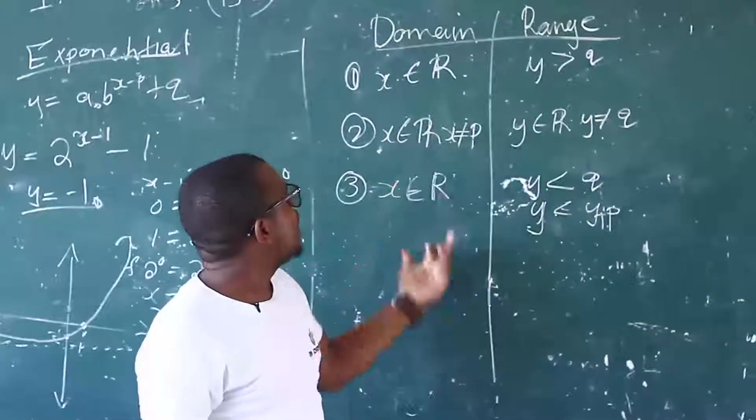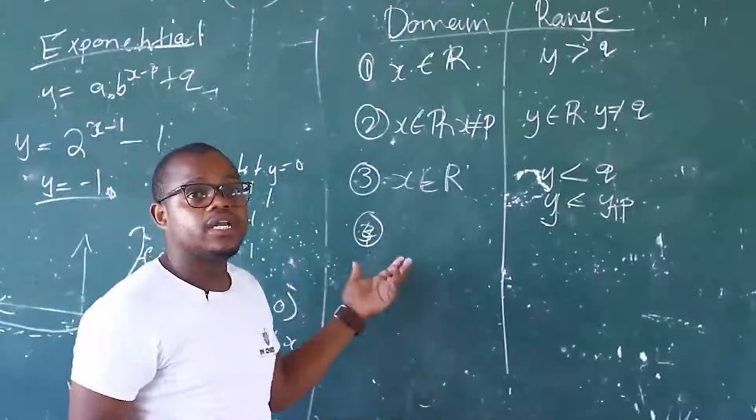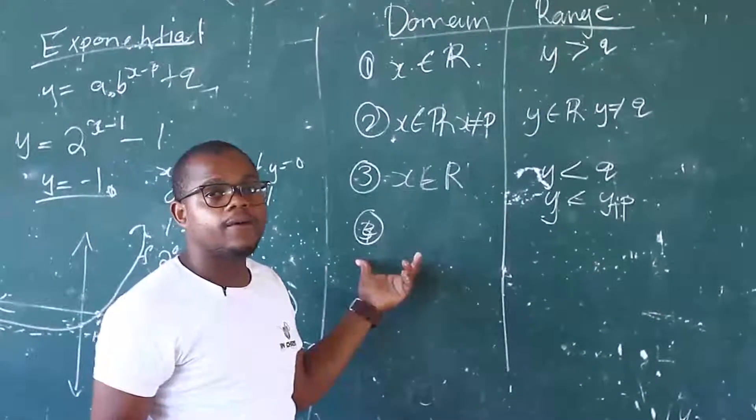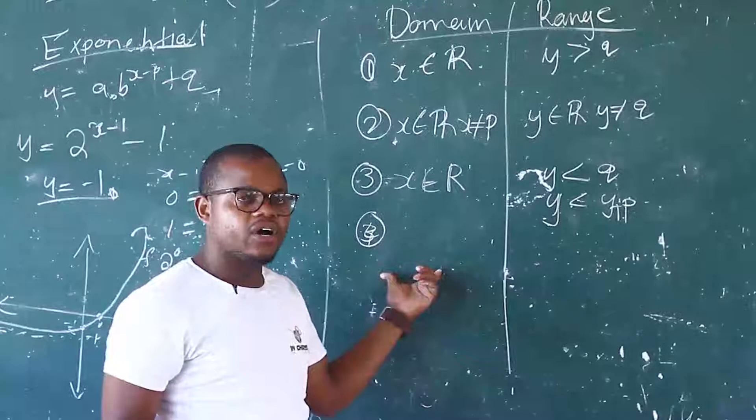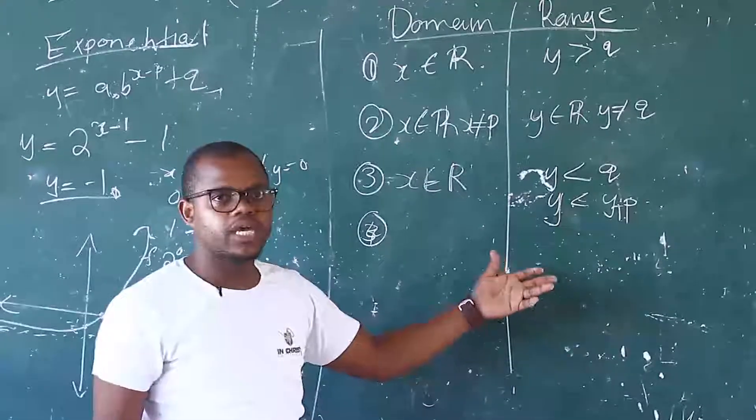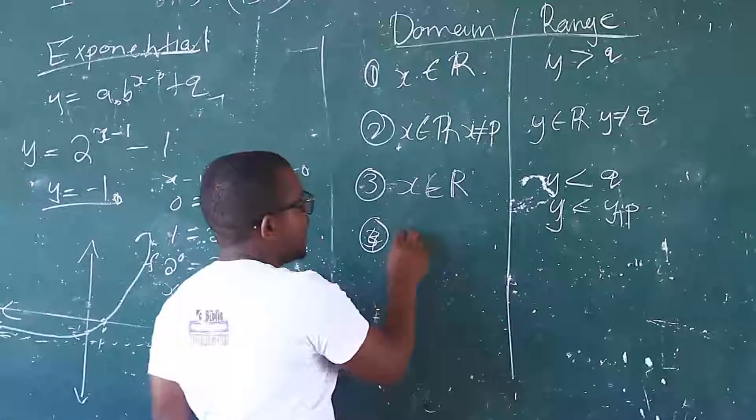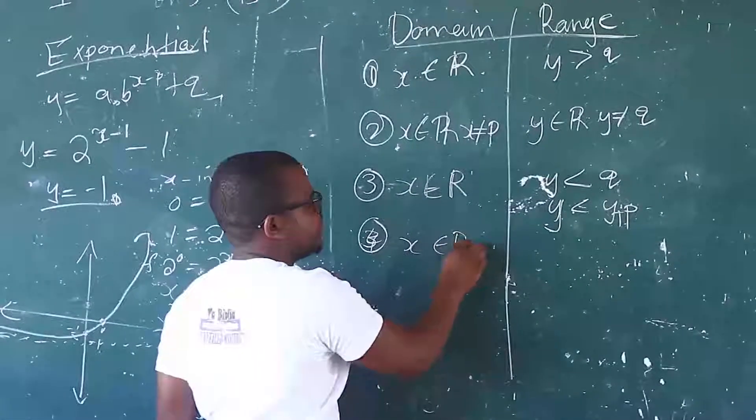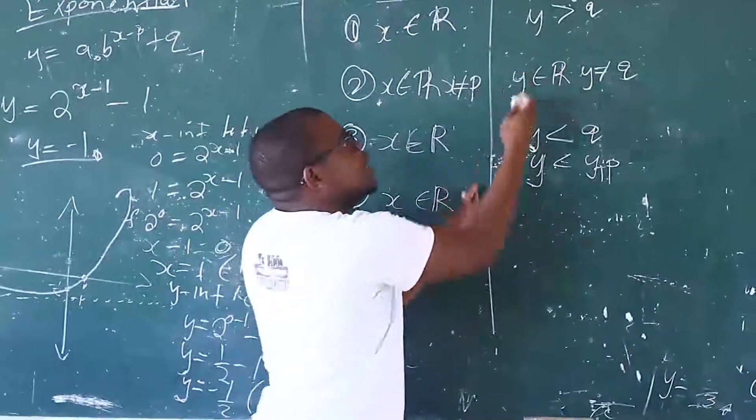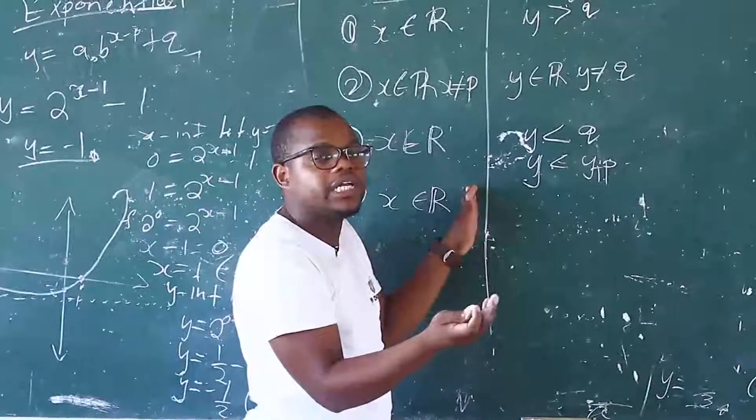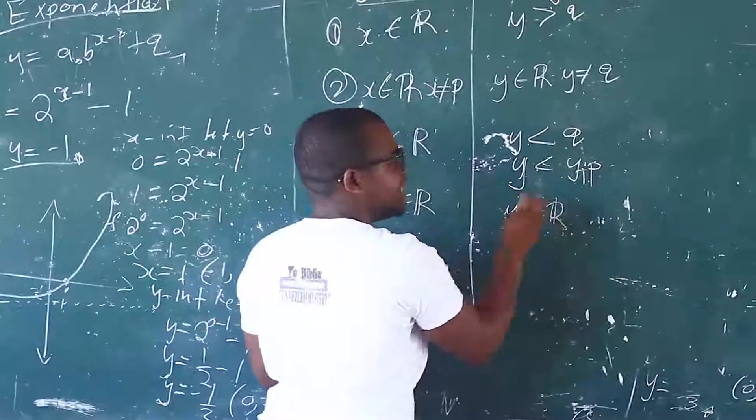Then number four is the straight line. Straight line. Okay? The straight line is very simple. For the straight line, X is an element of real numbers. Because there is no asymptote. And Y is also an element of real numbers. So that is the domain and range.